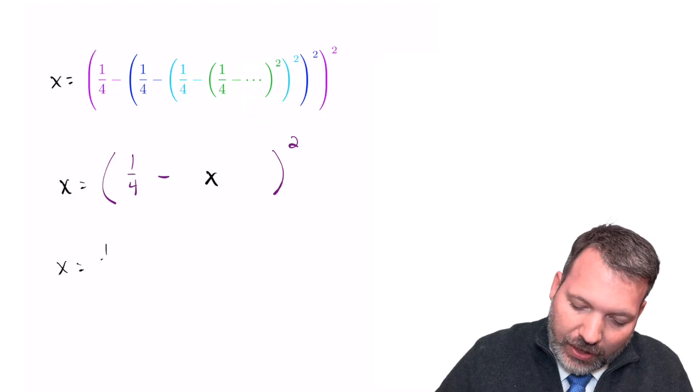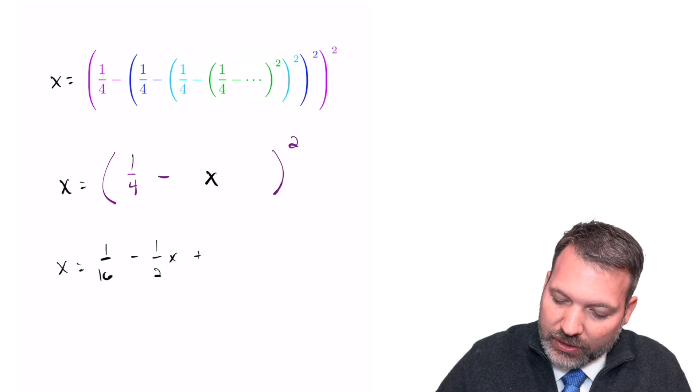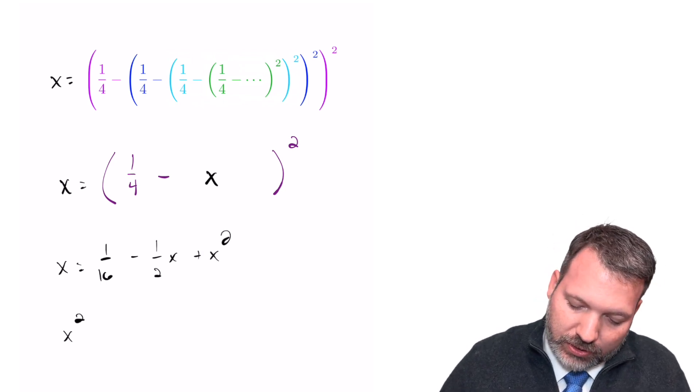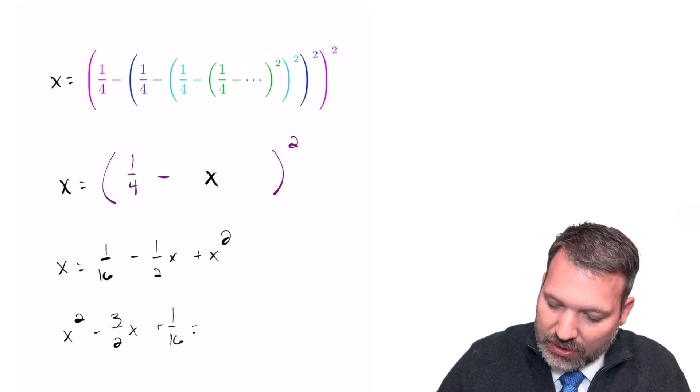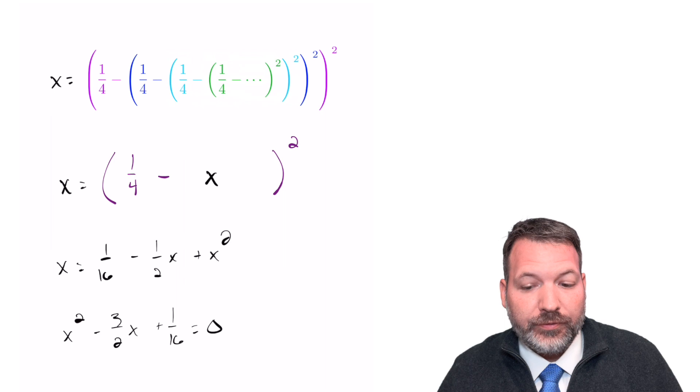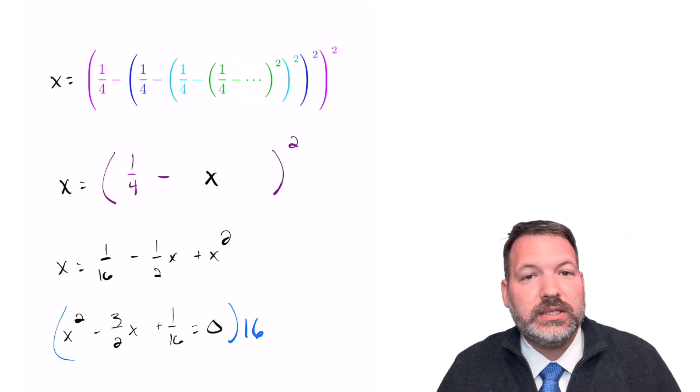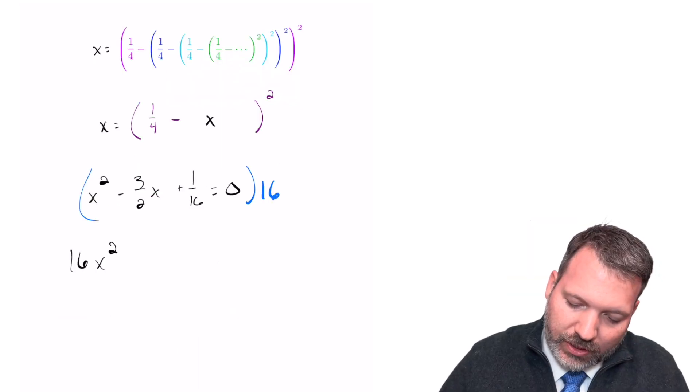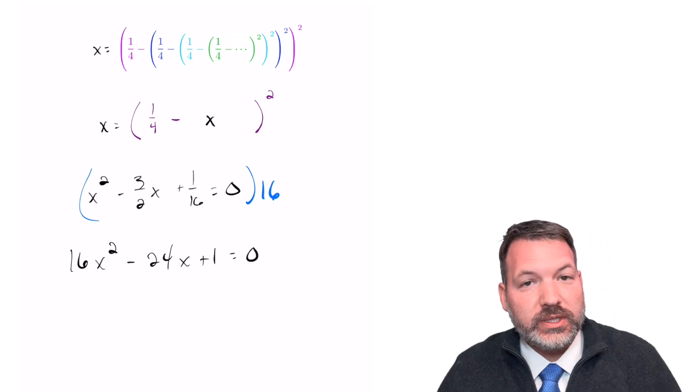This is now a very simple quadratic equation that we could solve with the quadratic formula. You could take that right side and expand it out into one-sixteenth minus one-half of x plus x squared. Manipulate this a little bit into x squared minus three-halves x plus one-sixteenth equals zero. If you're not a fan of fractions, you could multiply everything in this equation by 16 to get rid of